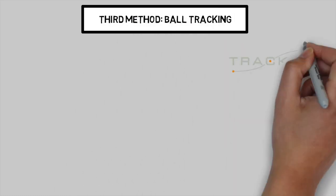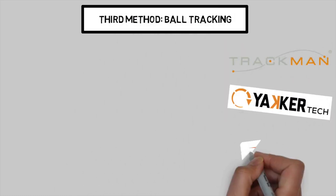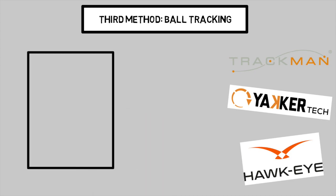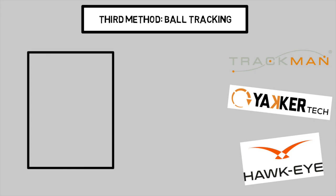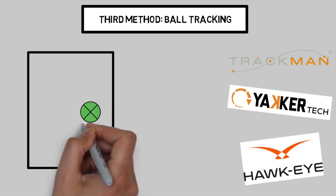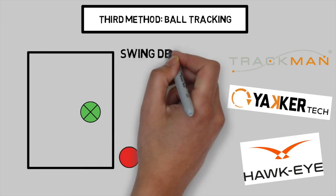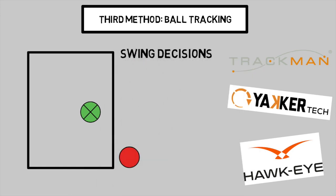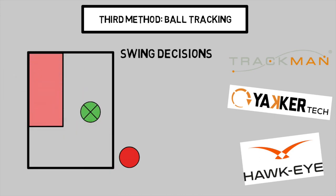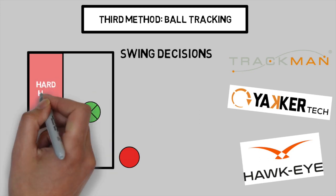The last way teams use technology to improve their hitters is through ball-tracking tech, such as Trackman, Jagger Tech, and the newly-adopted Hawkeye. There is a ton you can do with this information, but the two main ways it's used — first, analyzing swing decisions. For example, if a player swings at a pitch in the zone and spits on a pitch out of the zone, those are two good decisions. The more frequently you swing at good pitches, the more frequently you can expect that player to make quality contact, which often leads to more hits.